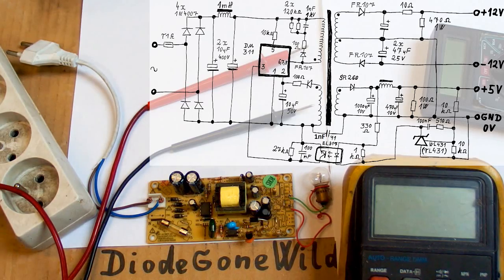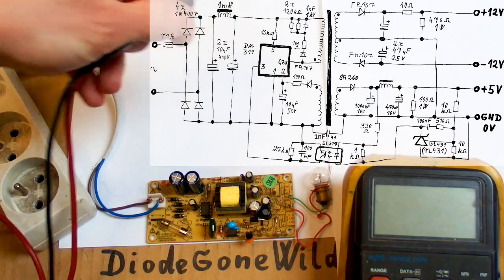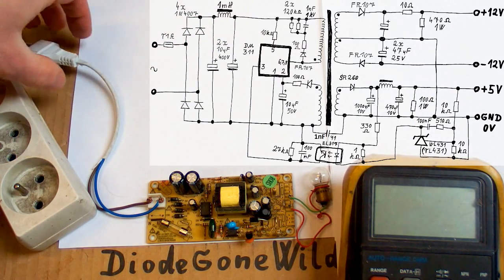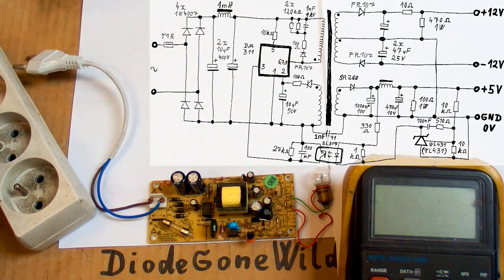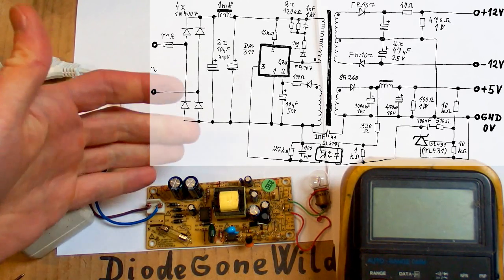So now the schematic should be visible and let's start with some measurements. And of course this is going to be bloody dangerous because I'm going to stick it into mains and poke into it with my multimeter while it's live at mains voltage.